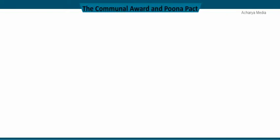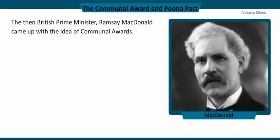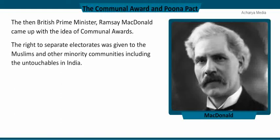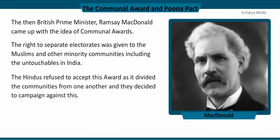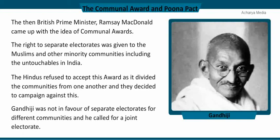British Prime Minister Ramsay MacDonald came up with the idea of communal awards to solve the problem of communal issues in India. According to this award, the right to separate electorates was given to the Muslims and other minority communities, including the untouchables in India. However, the Hindus refused to accept this award as it divided communities, and the Muslims, though not totally convinced, accepted it. Gandhiji was not in favor of separate electorates and called for a joint electorate, which gave increased representation to the depressed classes from 71 to 147 seats.